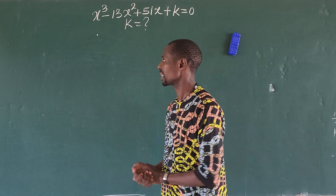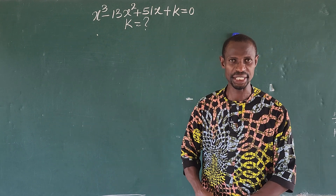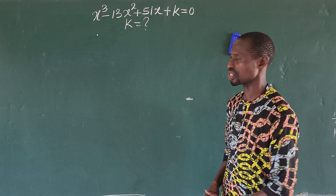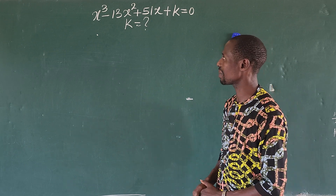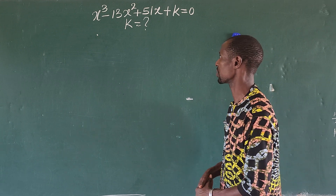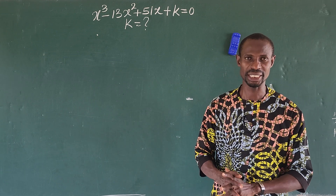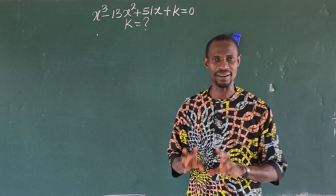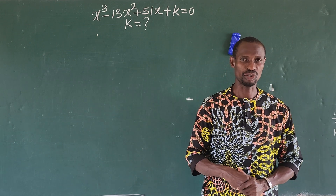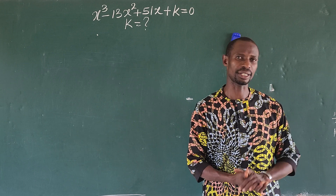Hello, welcome to today's class. Look at this polynomial equation — it's a cubic polynomial equation. The question is x to the power of 3 minus 15x to the power of 2 plus 51x plus k equals 0. What is the value of k that will make this cubic equation have three real solutions?